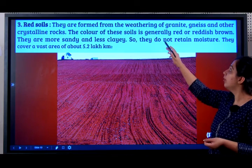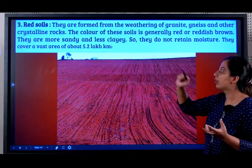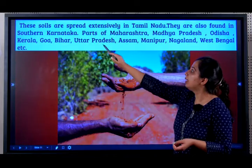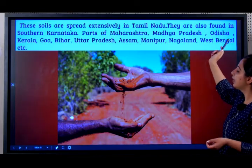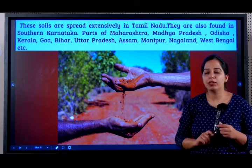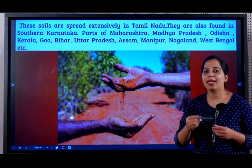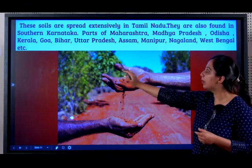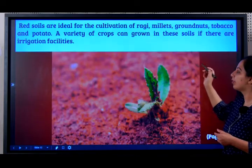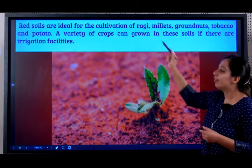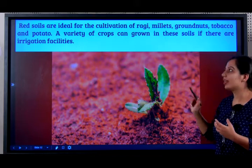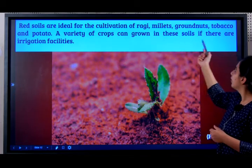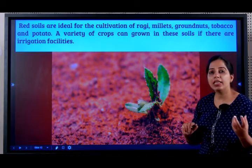From an examination point of view, you need to know which rock is weathered for the formation of red soil, what their color is, and that they are more sandy and less clayey. These soils are spread extensively in Tamil Nadu, and also found in southern Karnataka. A quick review question: which soil was found in northern Karnataka? Black soil. Red soils are also found in parts of Maharashtra, Madhya Pradesh, Odisha, Kerala, Goa, Bihar, UP, Assam, Manipur, Nagaland, West Bengal, etc. They are ideal for cultivation of ragi, millets, groundnuts, tobacco, and potato. A variety of crops can be grown if adequate irrigation facilities are provided.